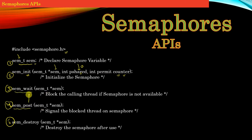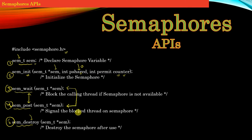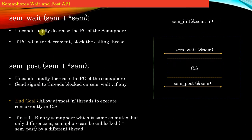The entire functionality of the semaphore relies on two APIs: sem_wait and sem_post. Once we are finished using the semaphore in our program, we can destroy it using sem_destroy. Shortly we will exercise all five APIs when we write a program. Now let us understand how semaphore actually works using sem_wait and sem_post, which form the entire functionality of semaphores.